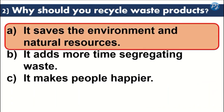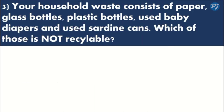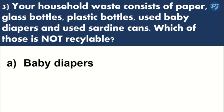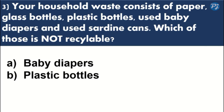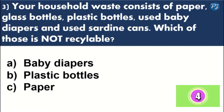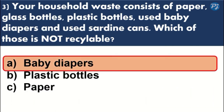The answer is A. Number 3: Your household waste consists of paper, glass bottles, plastic bottles, used baby diapers, and used sardine cans. Which of those is not recyclable? A — baby diapers. B — plastic bottles. C — paper. The correct answer is baby diapers.